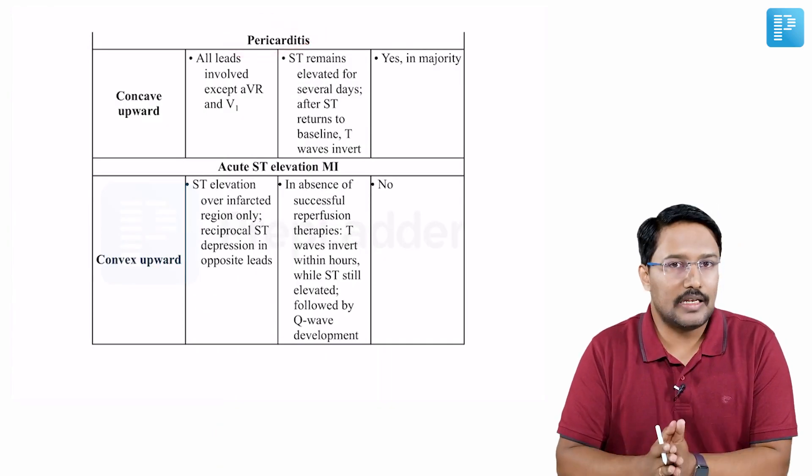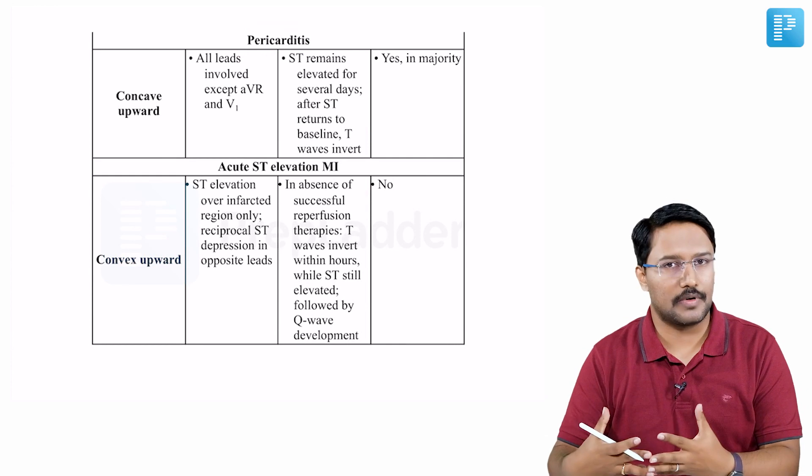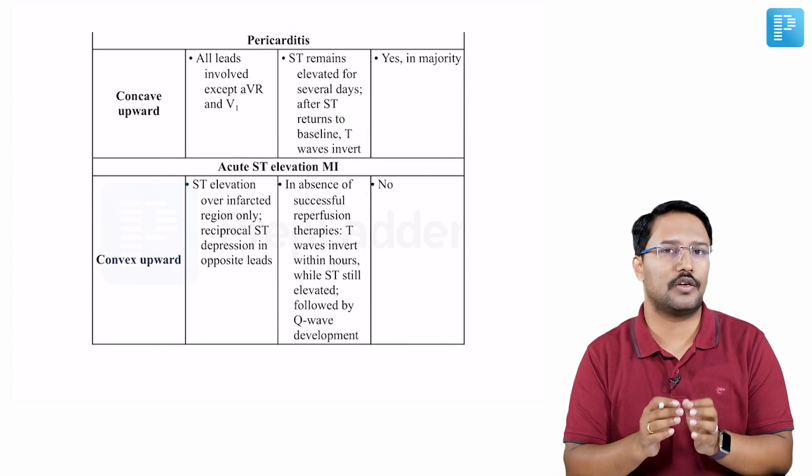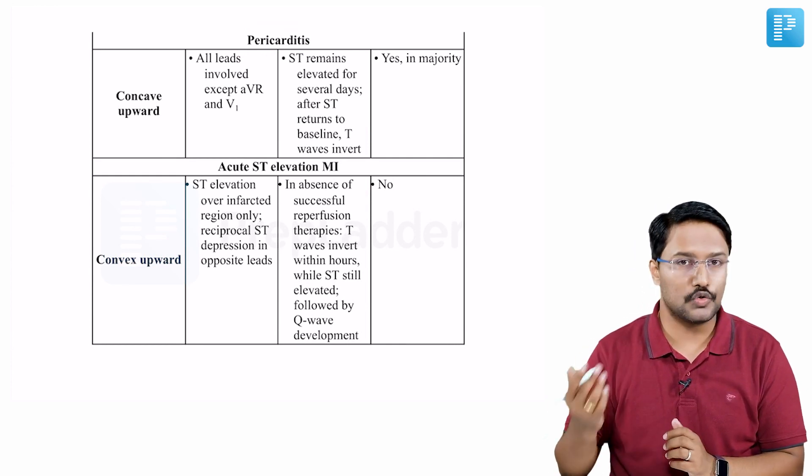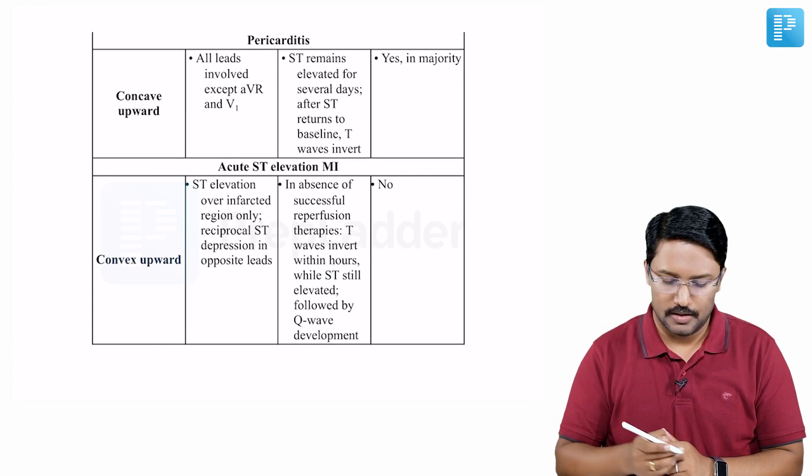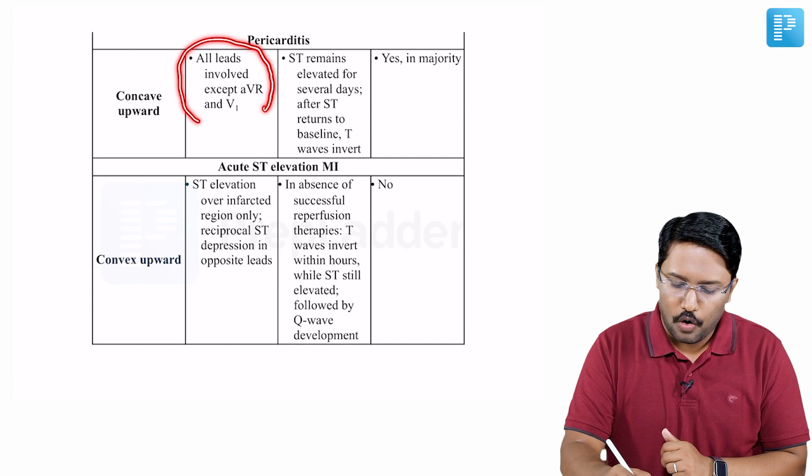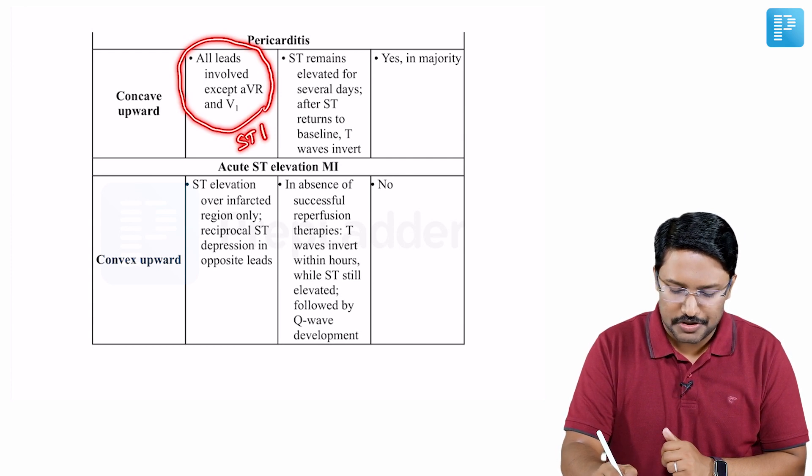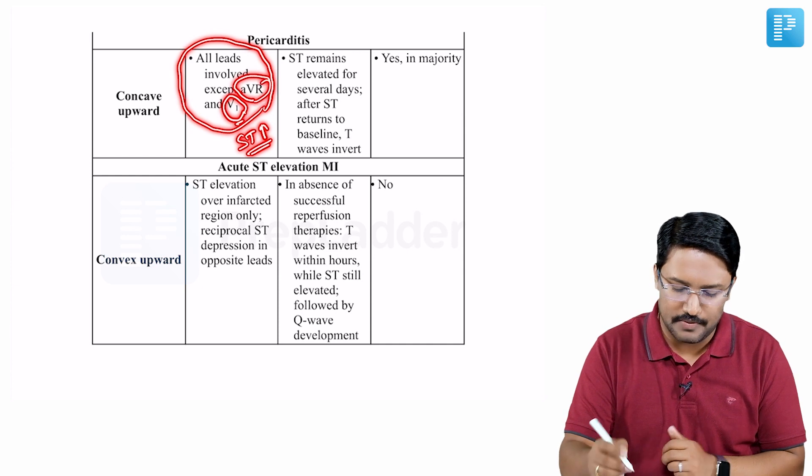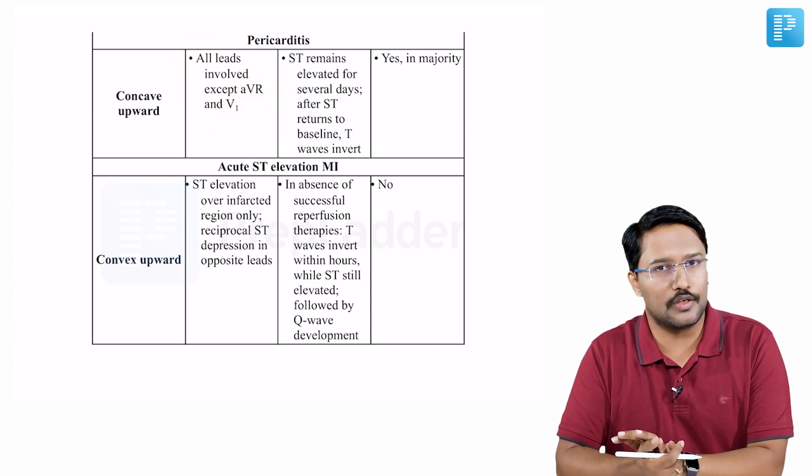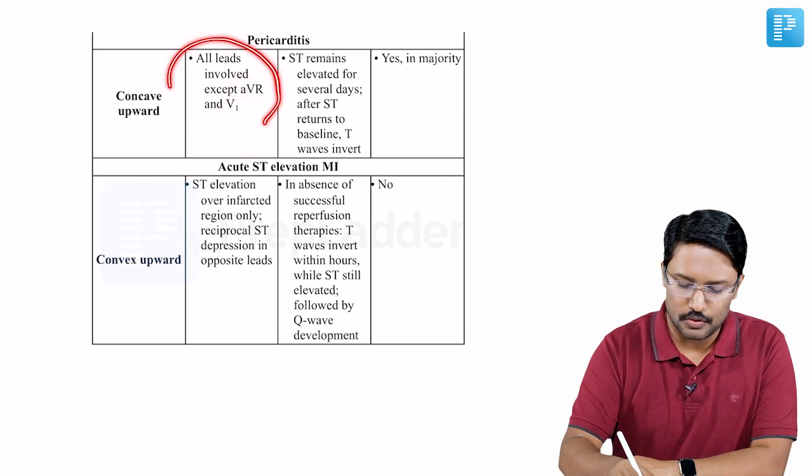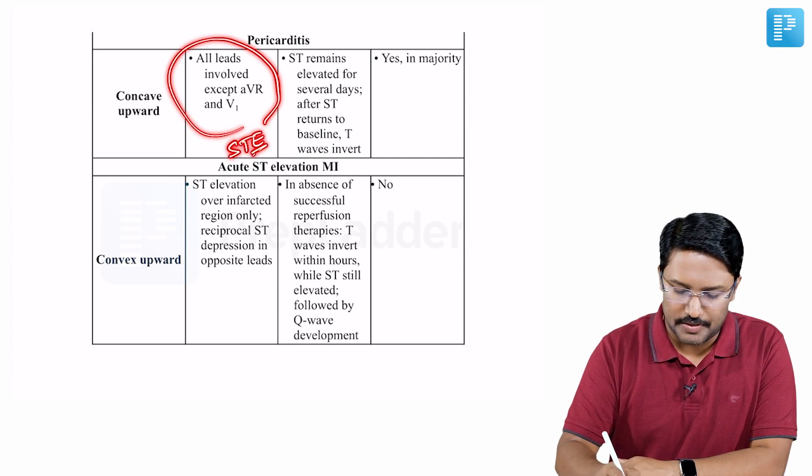In case of pericarditis, the ST elevation is extensive, generally not restricted to one or two vessel territories, which is the usual case in STEMI. In pericarditis, almost all leads may show ST elevation, except sometimes V1 and AVR, which being a flipped lead, you generally do not see there. Otherwise, most leads show ST elevation.